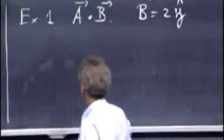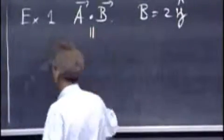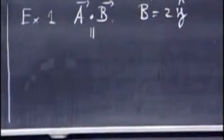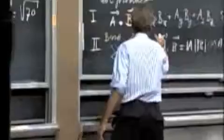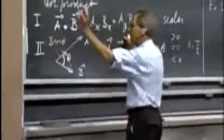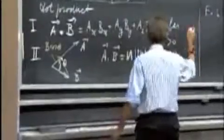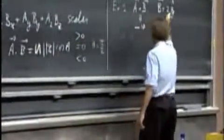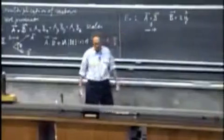Well, what is A dot B? There's no X component of B, so that becomes zero. This term becomes zero. There is only a Y component of B, so it is minus 5 times plus 2, so I get minus 10 because there is no Z component. Simple as that. So it's minus 10.